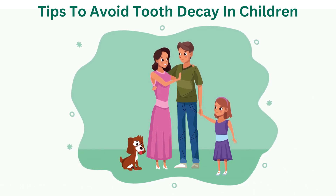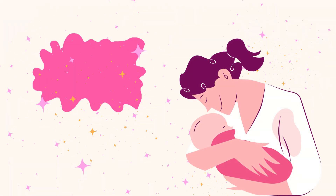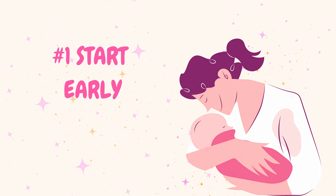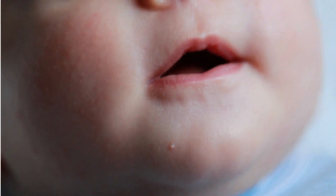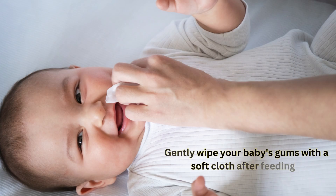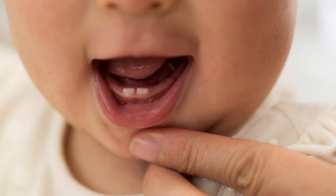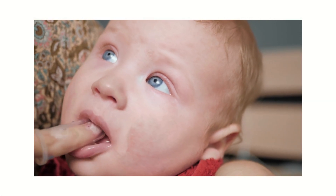Number one: start early. It is never too early to initiate oral hygiene practices. Begin even before teeth emerge — you can gently wipe your baby's gums with a soft cloth after feeding. As soon as the first tooth appears, start brushing with a small, soft-bristle toothbrush and water.